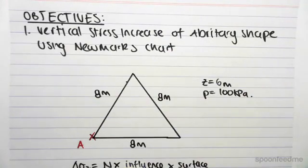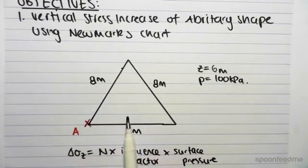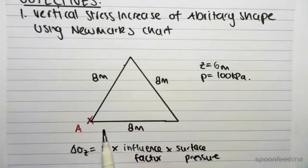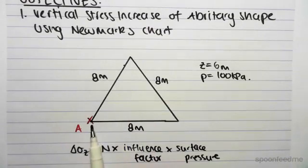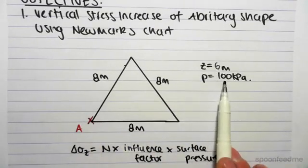So, we've been given this shape here, it's a triangle, it's an equilateral triangle where all sides are 8 meters. We're concerned about the stress under point A which is in the corner here. The depth we're looking at is 6 meters and the pressure applied is 100 kPa.